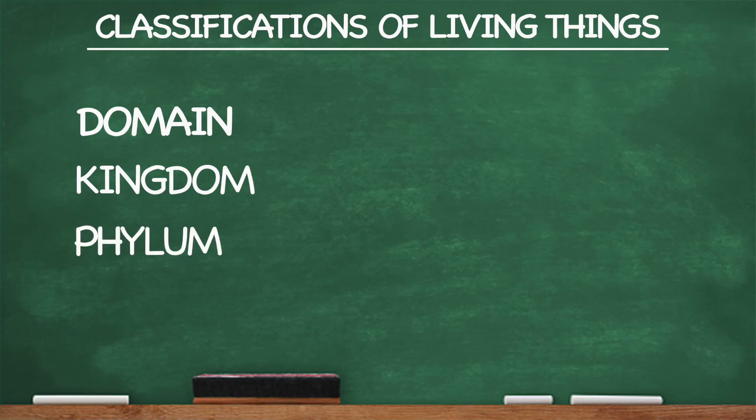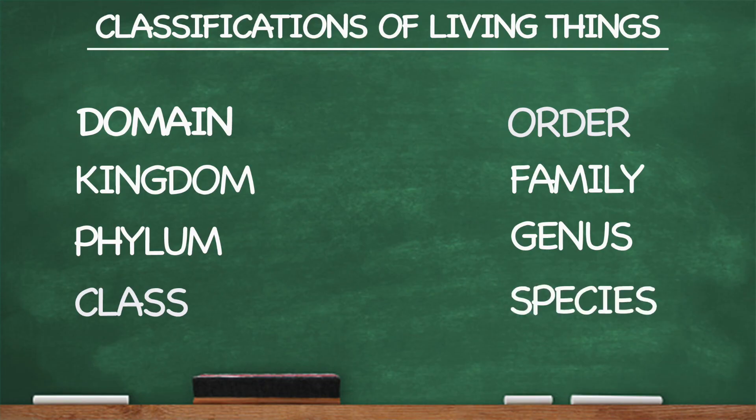Domain, kingdom, phylum, and class. Order, family, genus, and species. Domain, kingdom, phylum, and class. Order, family, genus, and species.